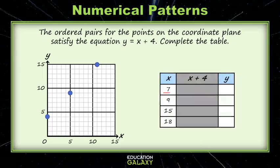Now I'm just going to plug in these values. I have seven for X: seven plus four equals eleven. Nine plus four equals thirteen. Next, fifteen plus four equals nineteen. And lastly, eighteen plus four equals twenty-two.